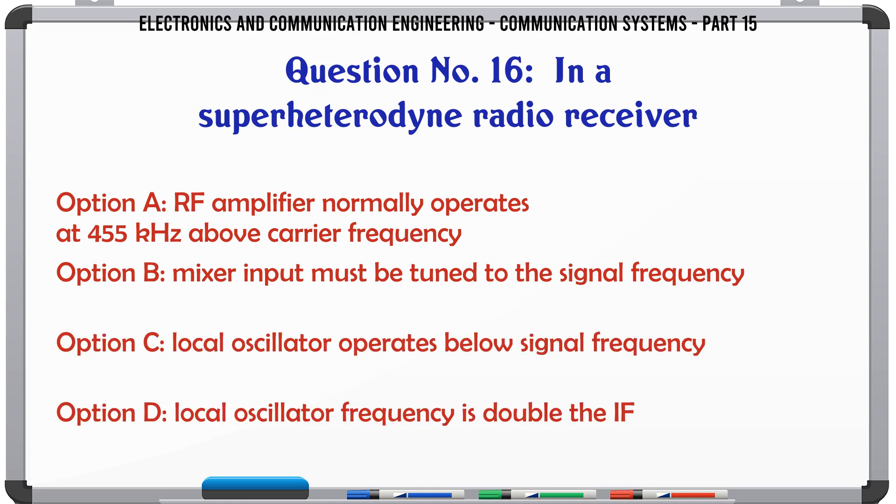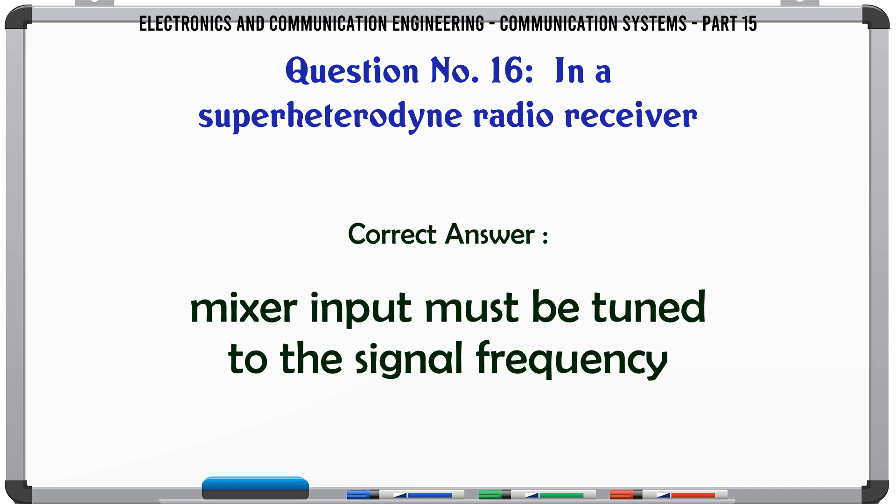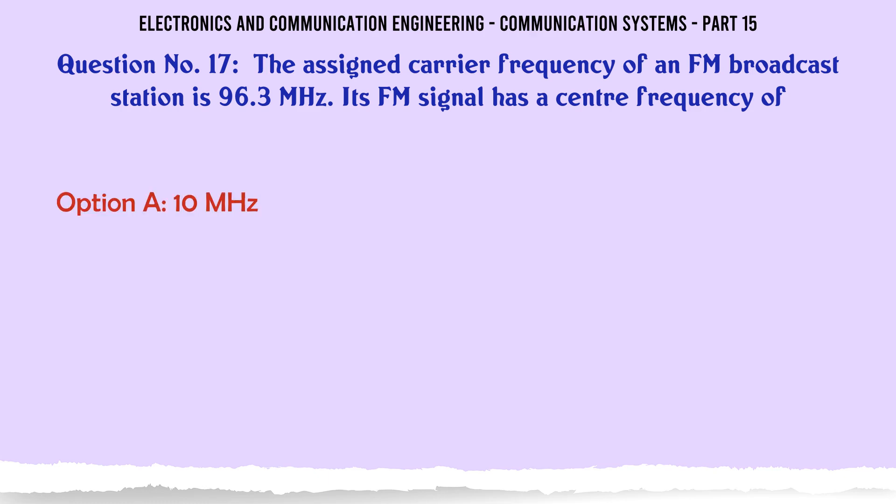In a superheterodyne radio receiver an RF amplifier normally operates at: a 455 KHz above carrier frequency, b mixer input must be tuned to the signal frequency, c local oscillator operates below signal frequency, d local oscillator frequency is double the IF. The correct answer is mixer input must be tuned to the signal frequency.